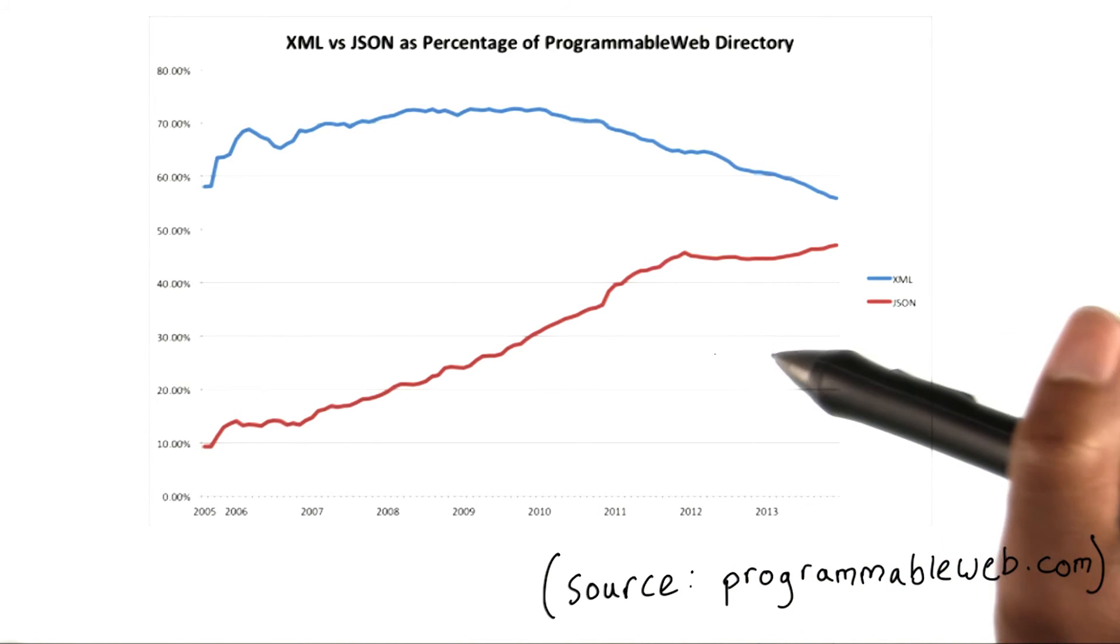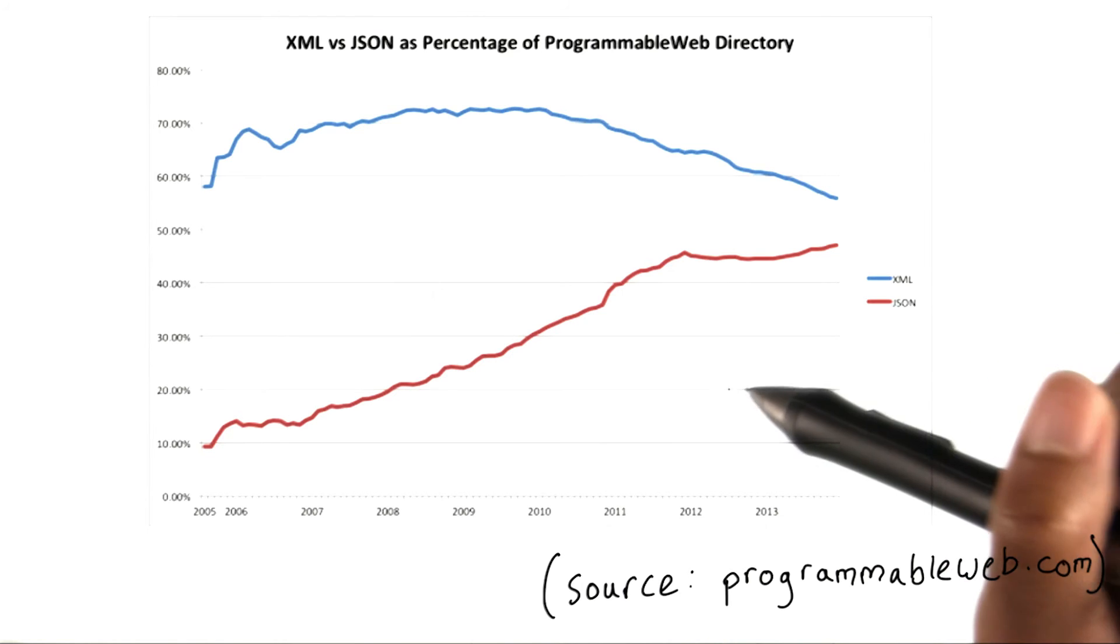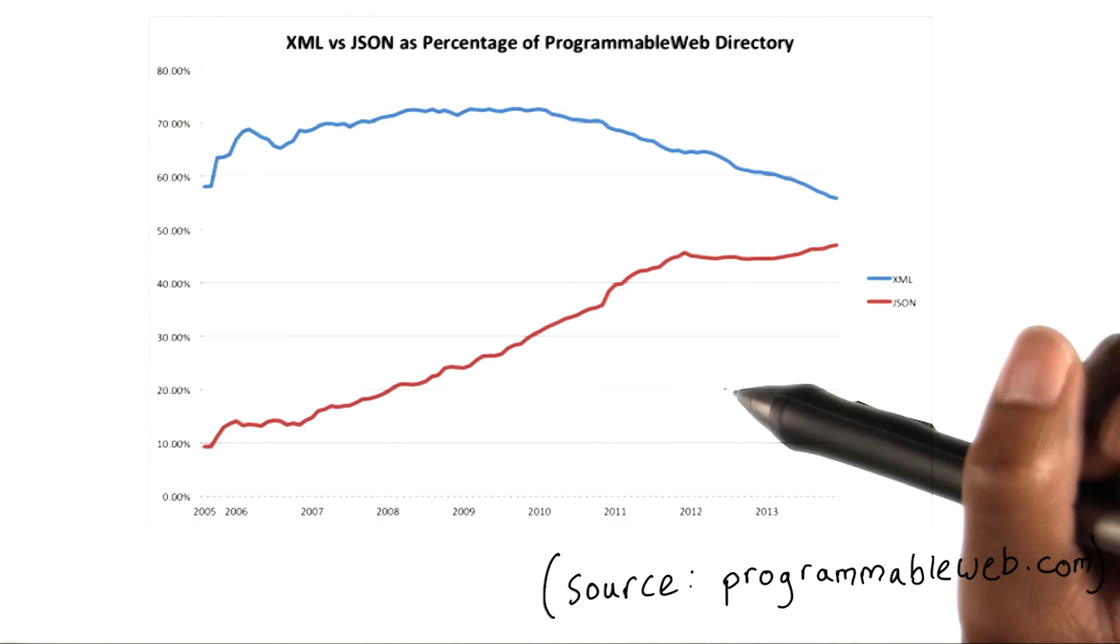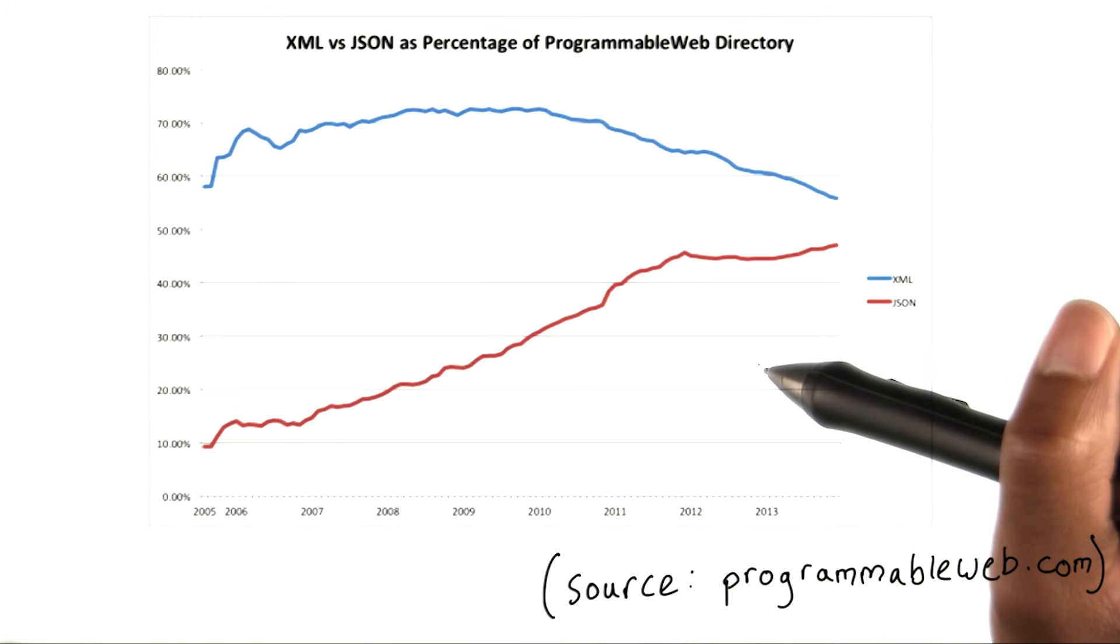By piggybacking off the popularity of JavaScript, JSON has been readily accepted by the web development community as the most common way to structure data sent across RESTful APIs.